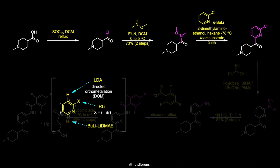It is interesting to note here the conditions adopted by the authors in order to favour the alpha-lithiation even in the presence of an ortho-directing group. On the other hand, competition between hydrogen-metal exchange and halogen-metal exchange was not an issue here, because halogen-metal exchange of a chloropyridine is not highly favoured.